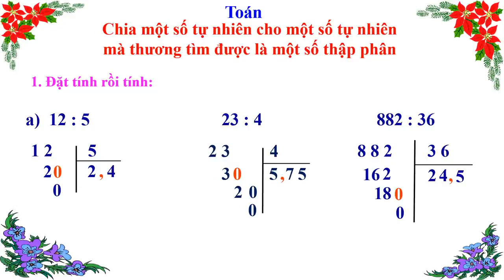Vừa rồi các em đã hoàn thành bài tập số 1. Thầy khen tất cả những bạn đã làm tốt và có kết quả chính xác. Còn những bạn làm chưa tốt hoặc có kết quả sai, các bạn cố gắng viết lại bài tập và chia nhiều lần để củng cố kiến thức.